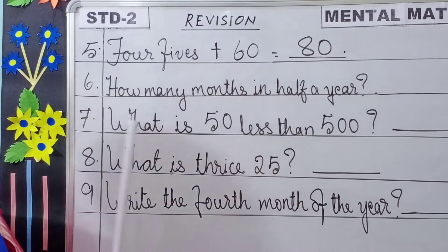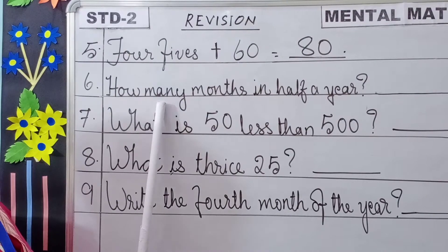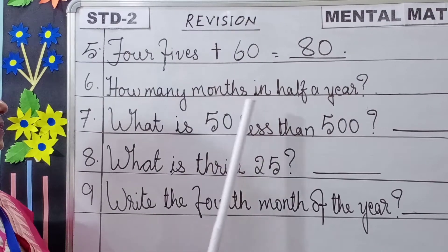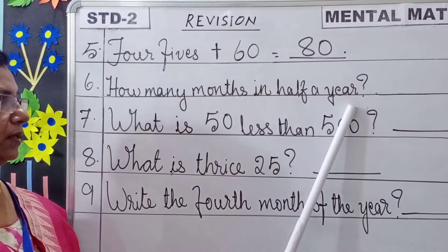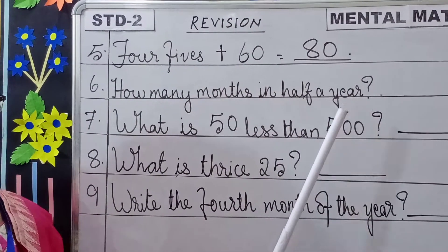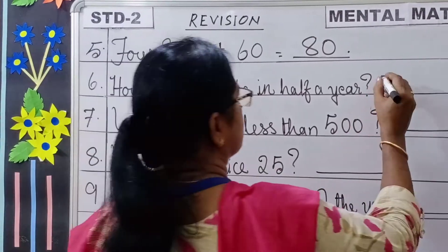Next question: How many months in half a year? How many months? 6 months.